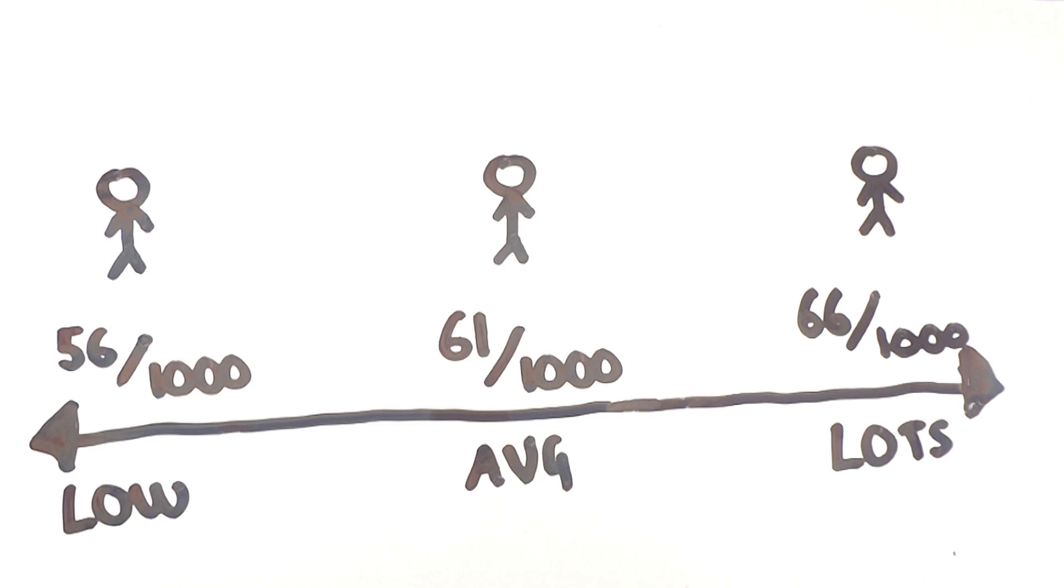On the other hand, those who eat the most will see 66 out of 1000 people develop bowel cancer on average. That's 10 more cases between those who eat the least and those who eat the most. Basically like most studies, this one too is using scaremongering tactics by releasing the relative risk compared to the much smaller absolute risk.